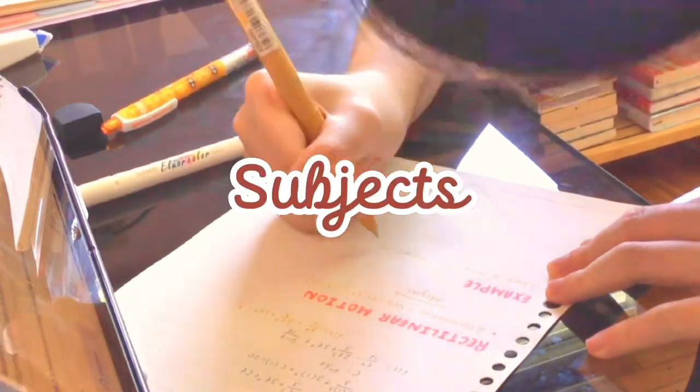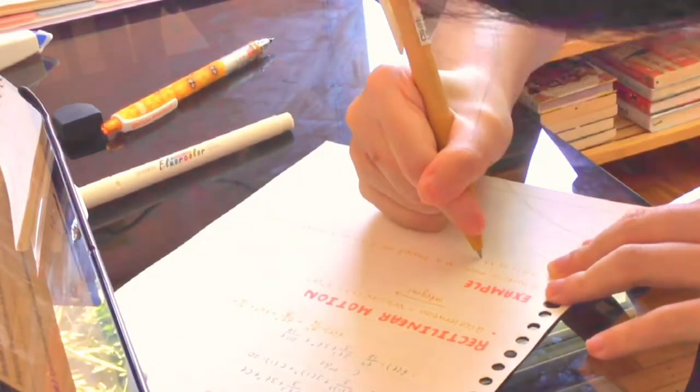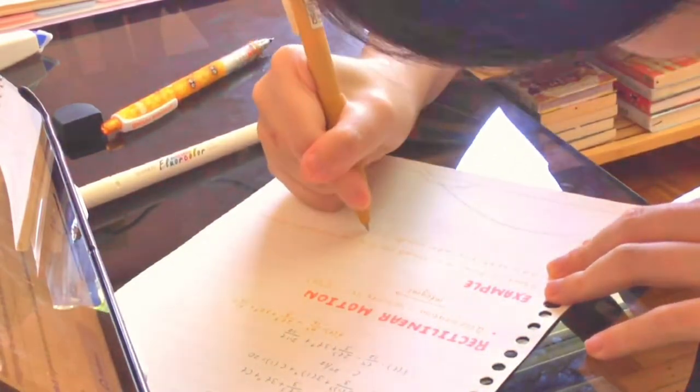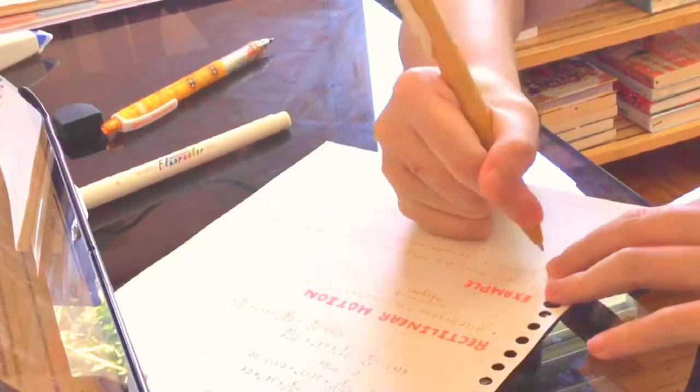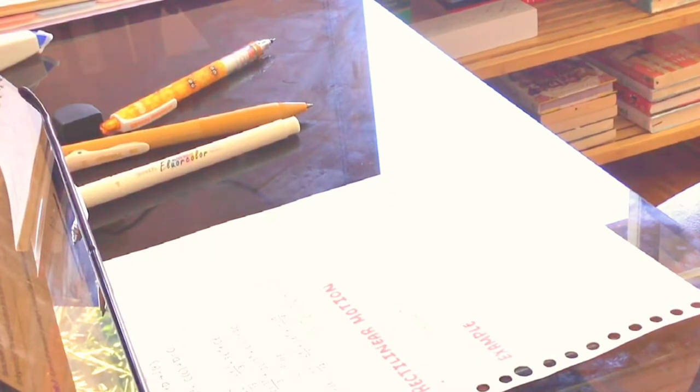Next is subjects. You might already know that there are a lot of subjects to take in Ateneo compared to other universities. We have this thing called core classes, which are required by every student, no matter what course you're in.